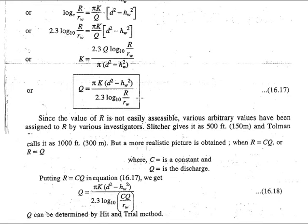If you know all these unknown values then we can determine the value of discharge. The main problem is how we can estimate this radius of influence, because that is something not easily seen by the naked eye. So some scientists have given arbitrary values of R. Let's say Sikjer given 150 meters, Tolman has given 300 meters.